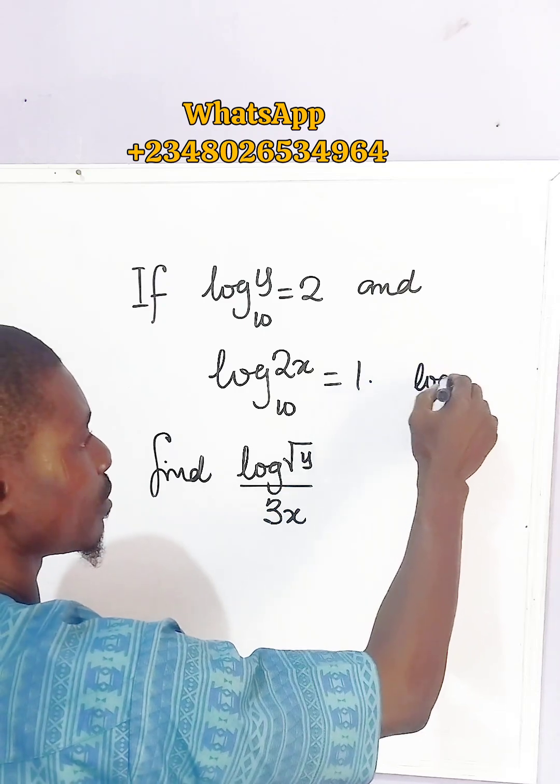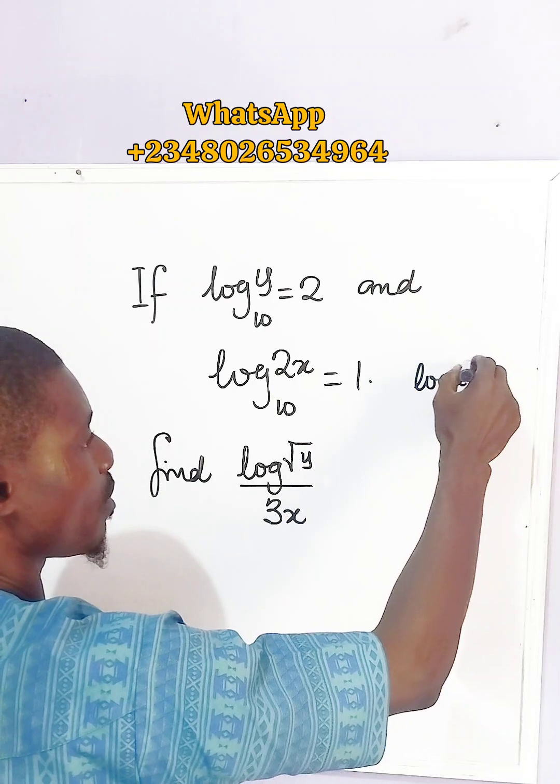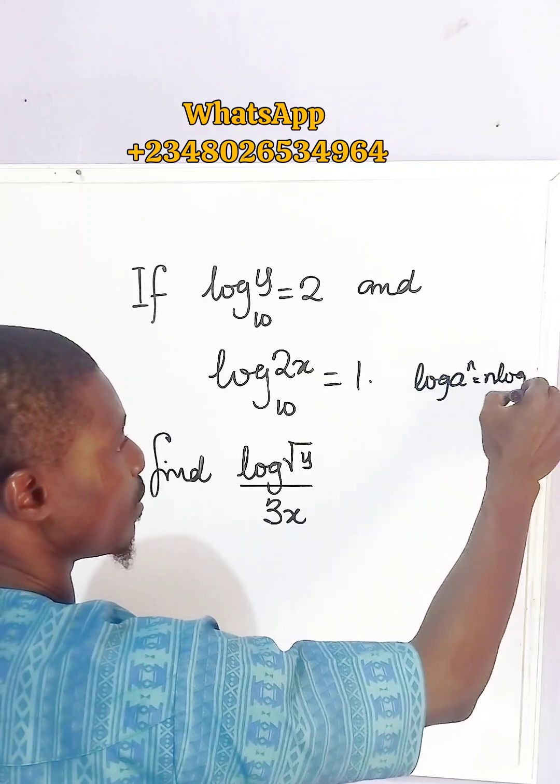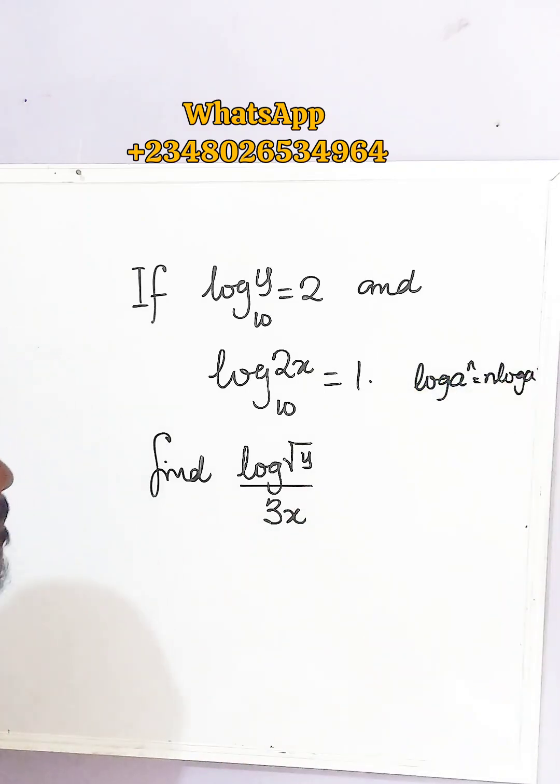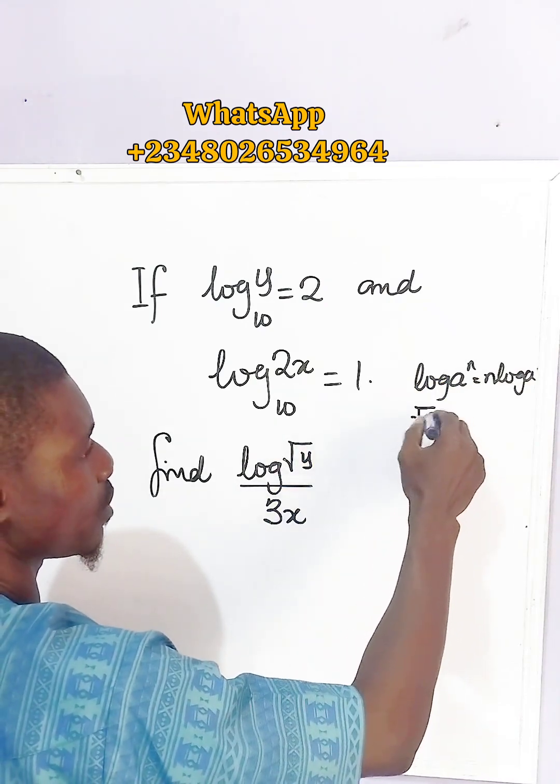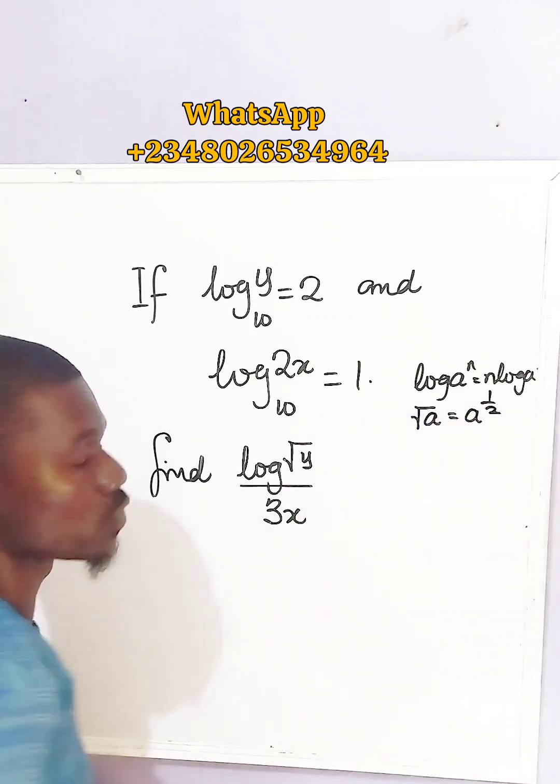this will give you n log a. And if you have the square root of a, it is simply a raised to the power of 1/2.